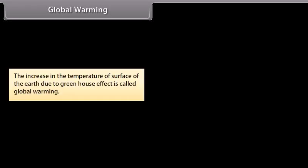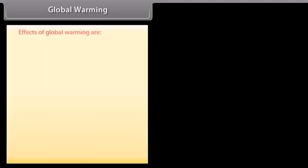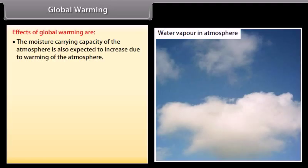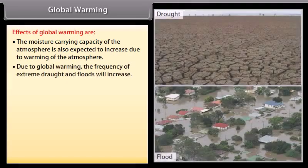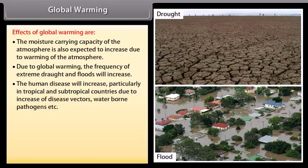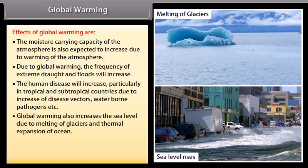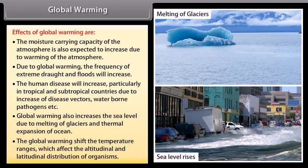Global Warming: the increase in the temperature of the surface of the Earth due to the greenhouse effect is called global warming. Effects of global warming include: increased moisture-carrying capacity of the atmosphere, increased frequency of extreme droughts and floods, increased human disease particularly in tropical and subtropical countries due to disease vectors and waterborne pathogens, rising sea levels due to melting of glaciers and thermal expansion of oceans, and shifts in temperature ranges affecting altitudinal and latitudinal distribution of organisms.